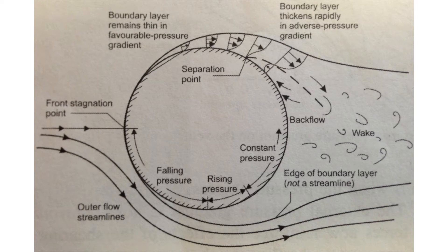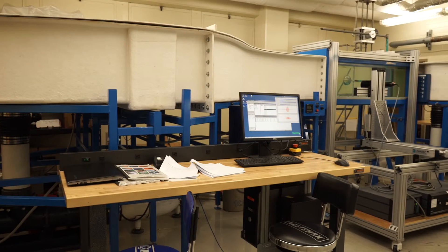The dye shows the formation of a viscous boundary layer, separation of the boundary layer, formation of vortices in the wake of the sphere, and the breakdown to turbulence by those vortices.